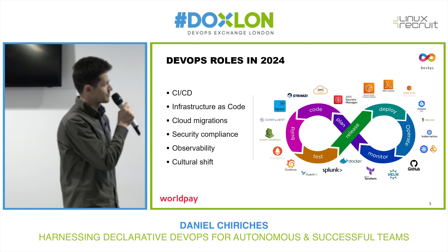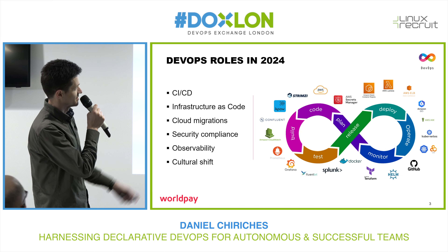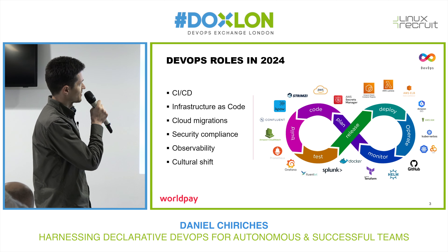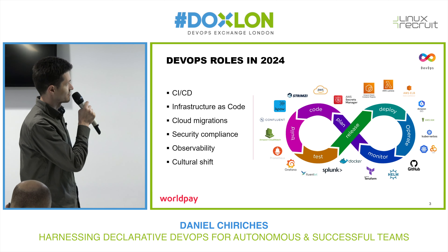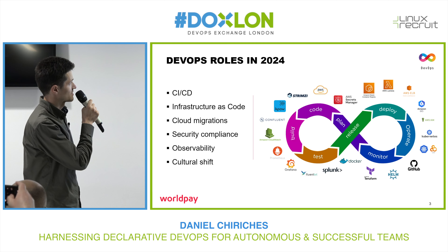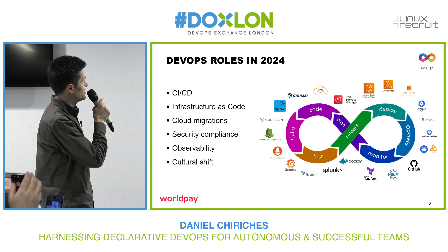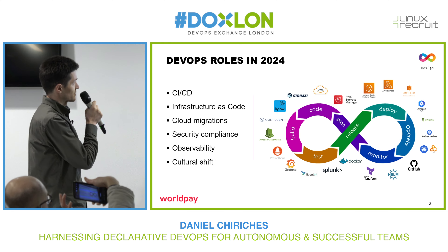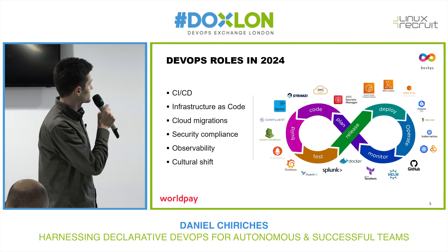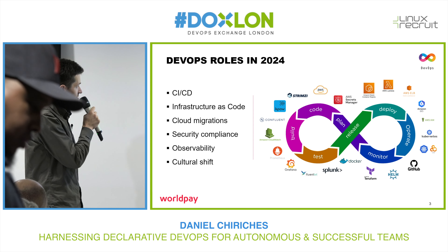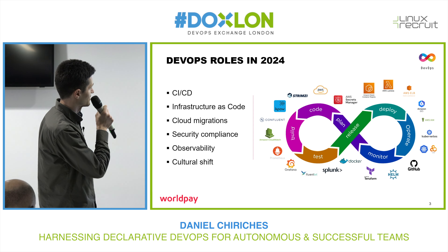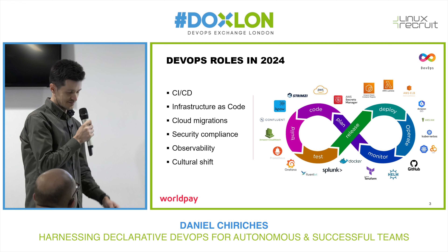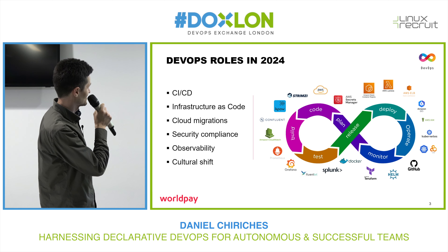The famous DevOps tool stack — probably not even the tip of the iceberg. There are now many roles and responsibilities that the DevOps team has: the CI/CD part with the application lifecycle, pipelines and everything else, setting up the infrastructure, managing cloud migrations, handling security compliance, the observability part — monitoring, logging, alerting and everything that comes with it. And the cultural shift that's kind of challenging our soft skills at times — that's important as well.